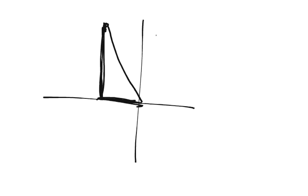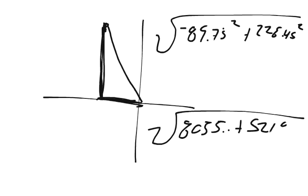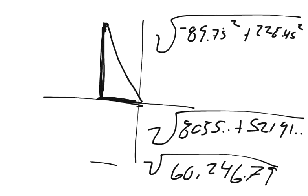So if I'm talking about, the formula would be the square root of negative 89.75 squared plus 228.45 squared, which is the square root of 8055 and some change, plus 52,191 and some change. So you add those together, you get the square root of 60,246.79. The square root of that, so my resultant vector is going to be 245.45 kilometers.